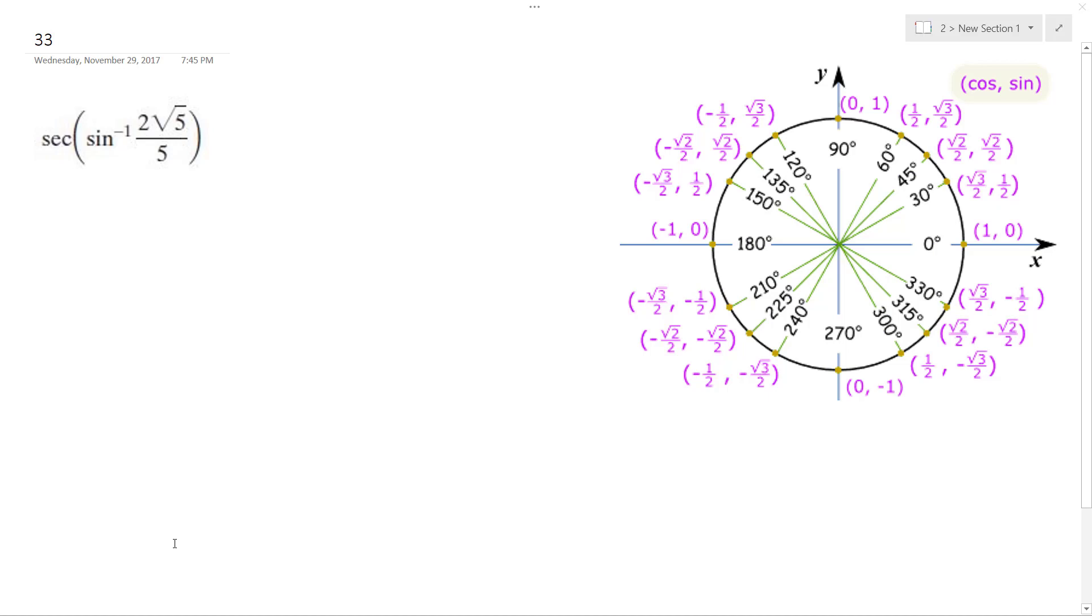Alright, we're going to figure out this problem. So it's secant of the inverse sine of 2 root 5 over 5.